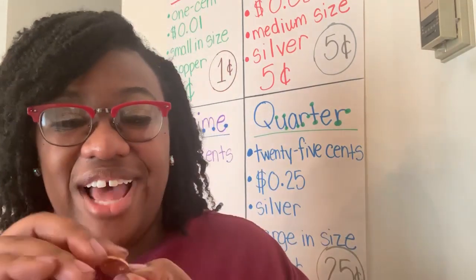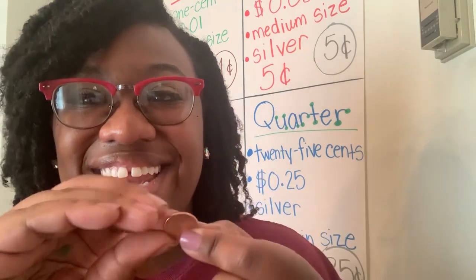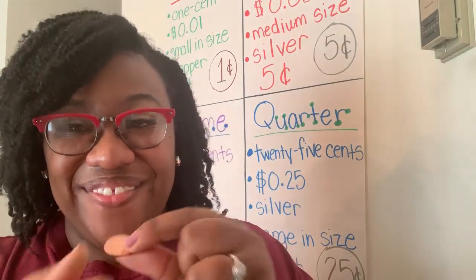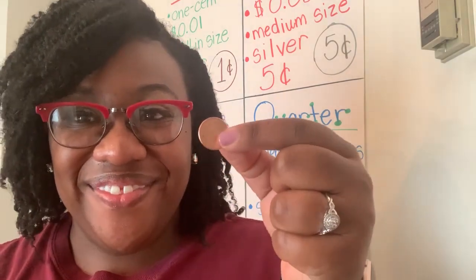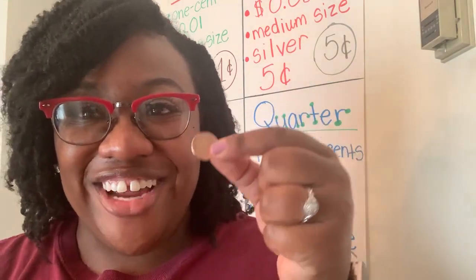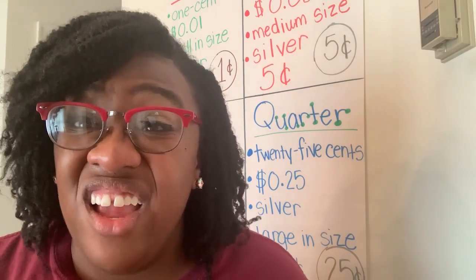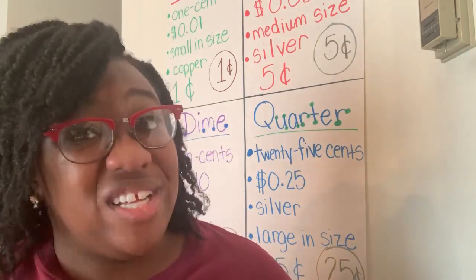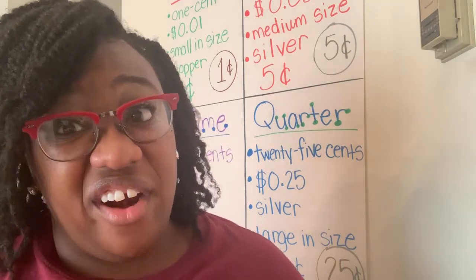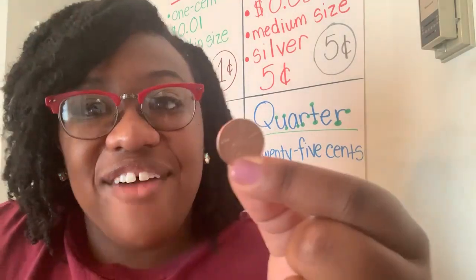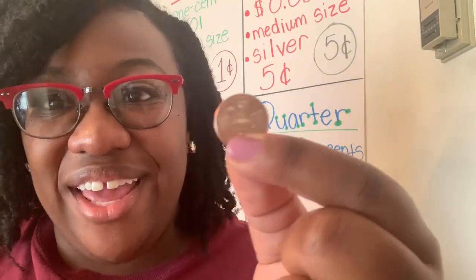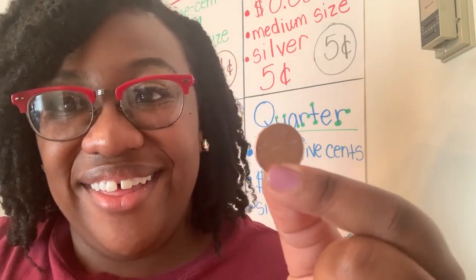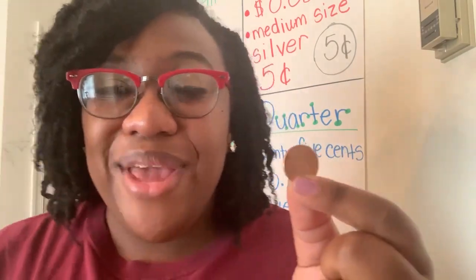Each coin has a head and each coin has a tail. All right, so we're going to look at each of our coins that we need to learn for kindergarten. Our first coin is the penny — can you say penny? And our penny is worth one cent.